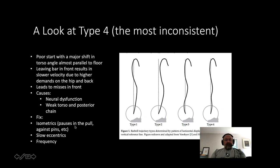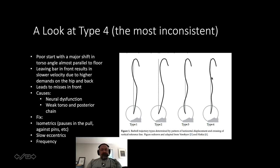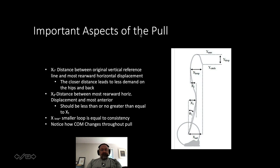Slow eccentrics and increased frequency — same as with Type 1. Work on correcting patterns by slowing things down and increasing frequency. It's not an easy fix. You're not going from Type 4 to Type 2 or even Type 3 in a few weeks. It's going to be an ongoing battle over six months to a year. What I'd recommend is leaving pauses and slow eccentrics in even the last four weeks before competition in the warm-ups. Then, as it gets heavier, go back to your improved normal snatch.